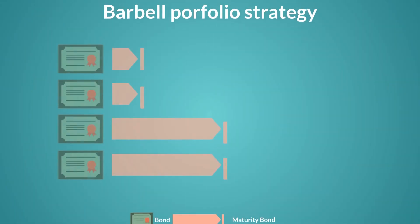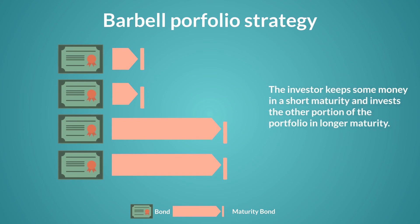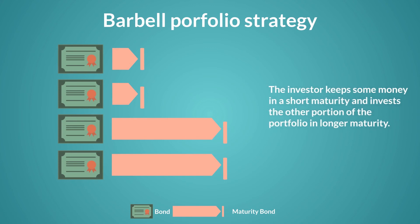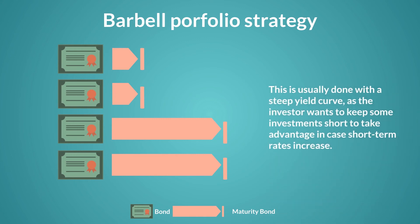Another strategy is for an investor to set up a barbell strategy where the investor keeps some money in a short-term maturity, say three months, and invests the other portion of the portfolio in a longer maturity, say at the 10-year mark. This is usually done with a steep yield curve as investors want to keep some investments short to take advantage in case short-term rates increase. But if they don't, they also want to take advantage of already high rates on the longer part of the curve.